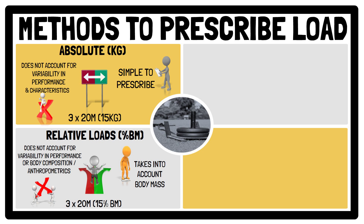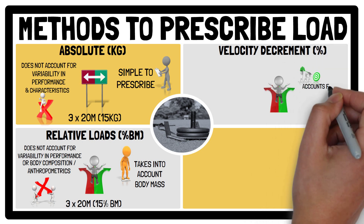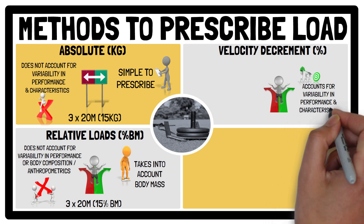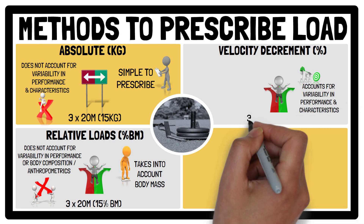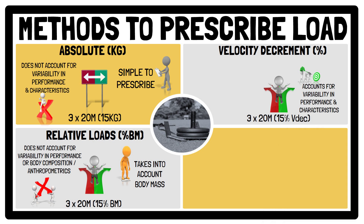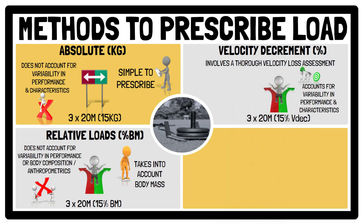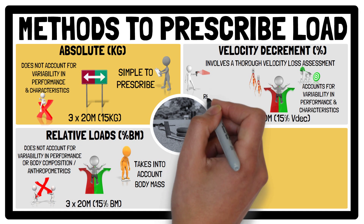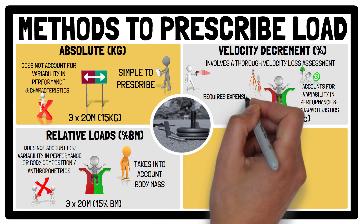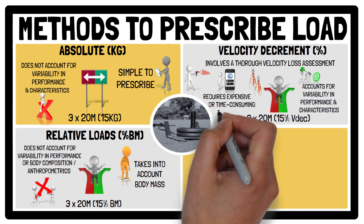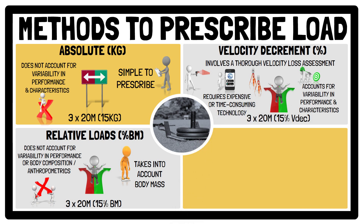Whereas velocity decrement is a more individualised approach, as it considers the velocity loss of the athlete as a result of the applied load — for example, performing 3x20m using a sled load that results in a 15% velocity decrement. Prescribing loads in this manner involves a thorough velocity loss assessment through an incremental loading sprint test, for example from 0% to 80% body mass. This requires access to timing gates or radar guns that can be costly, or the use of mobile apps and video analysis technology, which can make the assessment rather time-consuming.